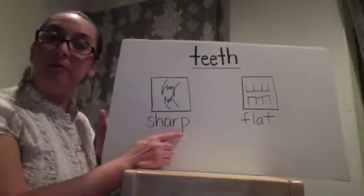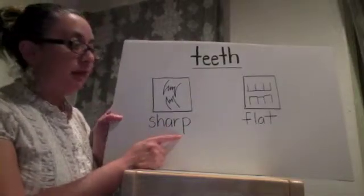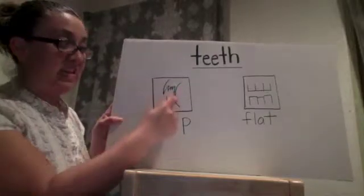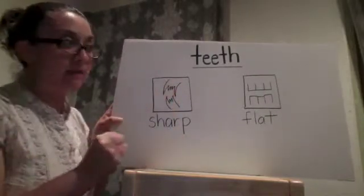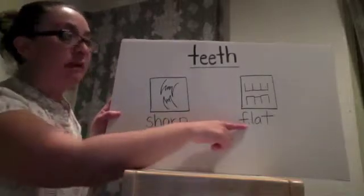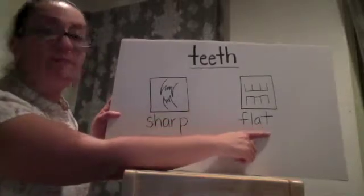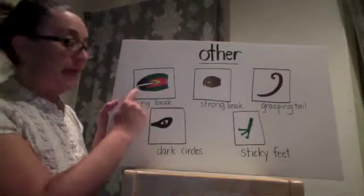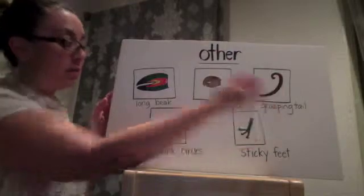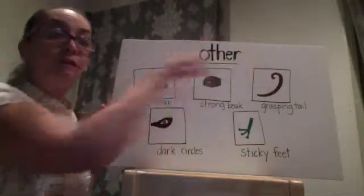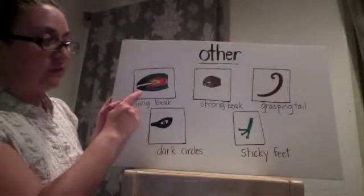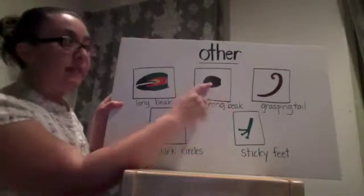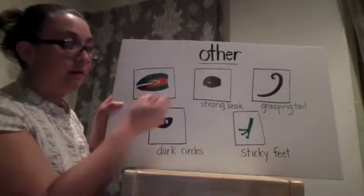Teeth are an important body part to an animal. Animals that wish to eat meat would benefit from sharp teeth so that they could tear that meat. Animals that wish to eat plants would benefit from flat teeth. An animal like a toucan benefits from its longer beak so that it may reach the fruit it wishes to eat. An animal like a macaw benefits from its strong beak that it uses to crack Brazil nuts.